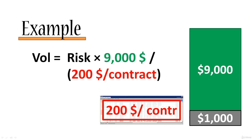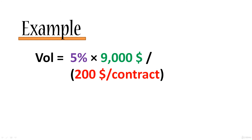That leaves one variable we still haven't added: Risk. Risk is the tricky part. For now we'll come up with the risk based on our experience or judgment. Further down in this course when we talk about the Kelly criterion, we'll learn how to mathematically derive the most optimum value of risk. Kelly's criterion is just fascinating — when I learned it, it completely changed my perspective on trading. It's something you have to know and use.